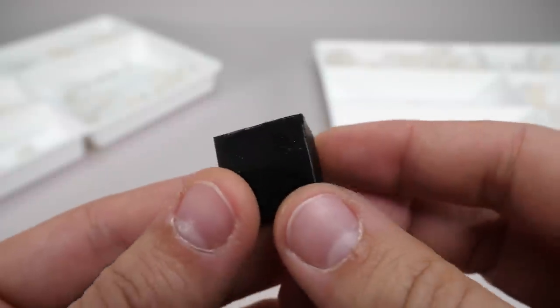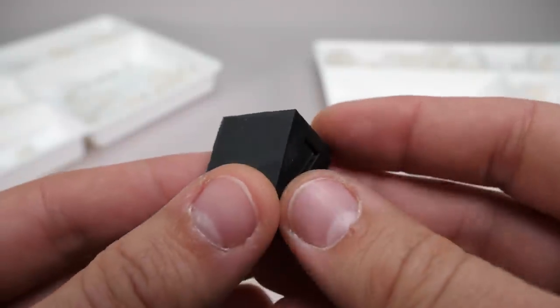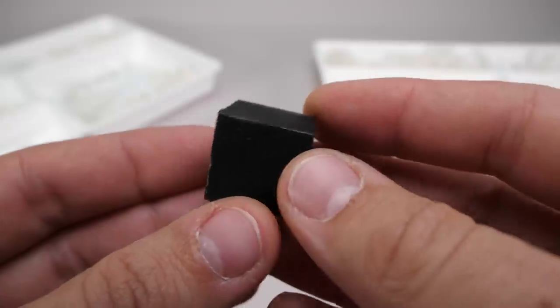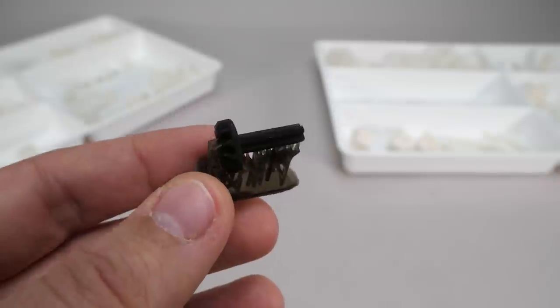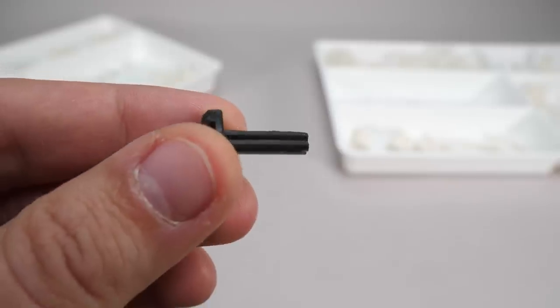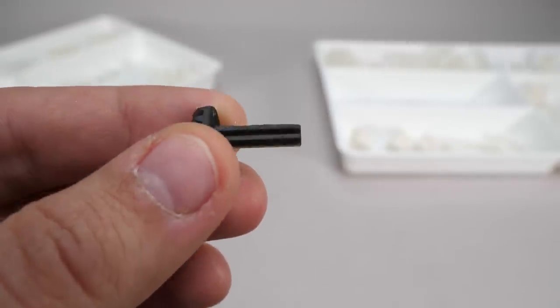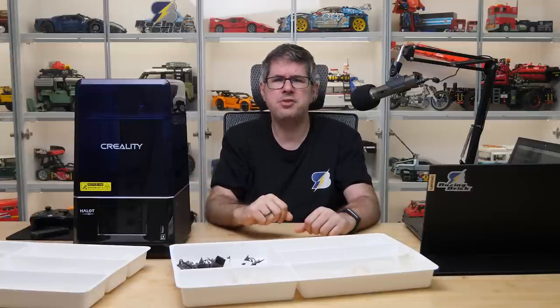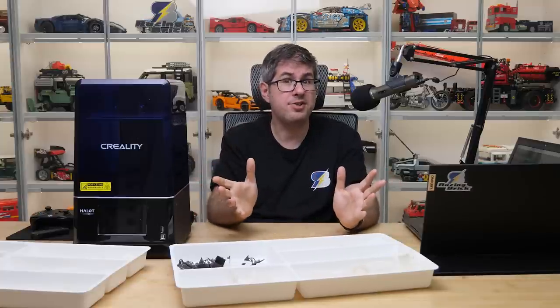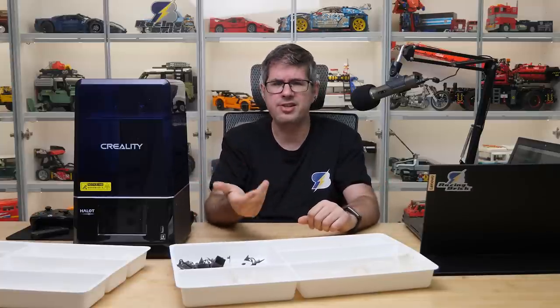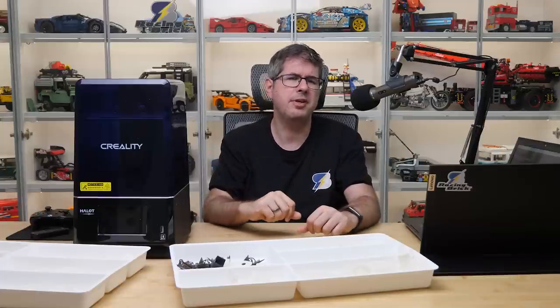I just did some additional testing with Anycubic's ABS-like resin, since it arrived recently. I would say the results are a little better, but you can still see the inaccuracies on the axle around the support points, and the cube still has some rough edges. So that's a challenge I just haven't been able to solve yet. If you have any recommendations or experience with proper orientation and support structure to get prints with accurate detail all around, please let me know in the comments!